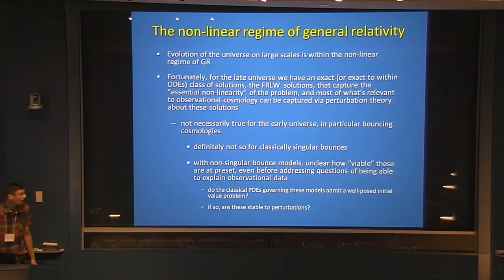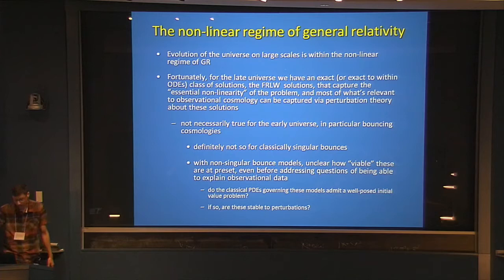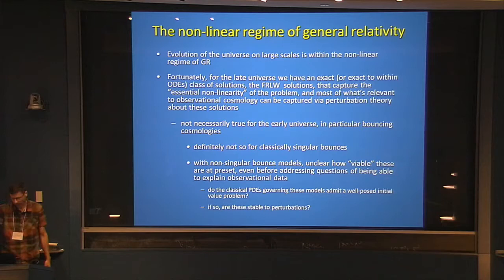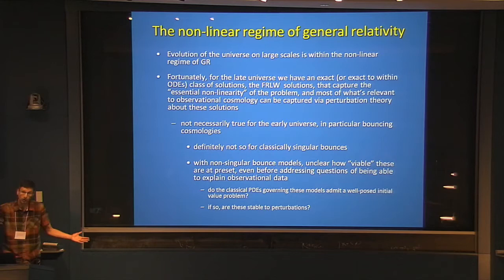Even today, the evolution of the universe on large scales — on scales of the Hubble radius — is well within the nonlinear regime of general relativity. But fortunately we have an exact class of solutions, the Friedmann-Robertson-Walker solutions, that capture the essential nonlinearity of the problem. For most of what's relevant to observational cosmology, we really only have to deal with perturbations about that solution. Even though on scales of the Hubble radius we're in the nonlinear regime of relativity — very much like the problem inside of black holes — we have an exact solution.